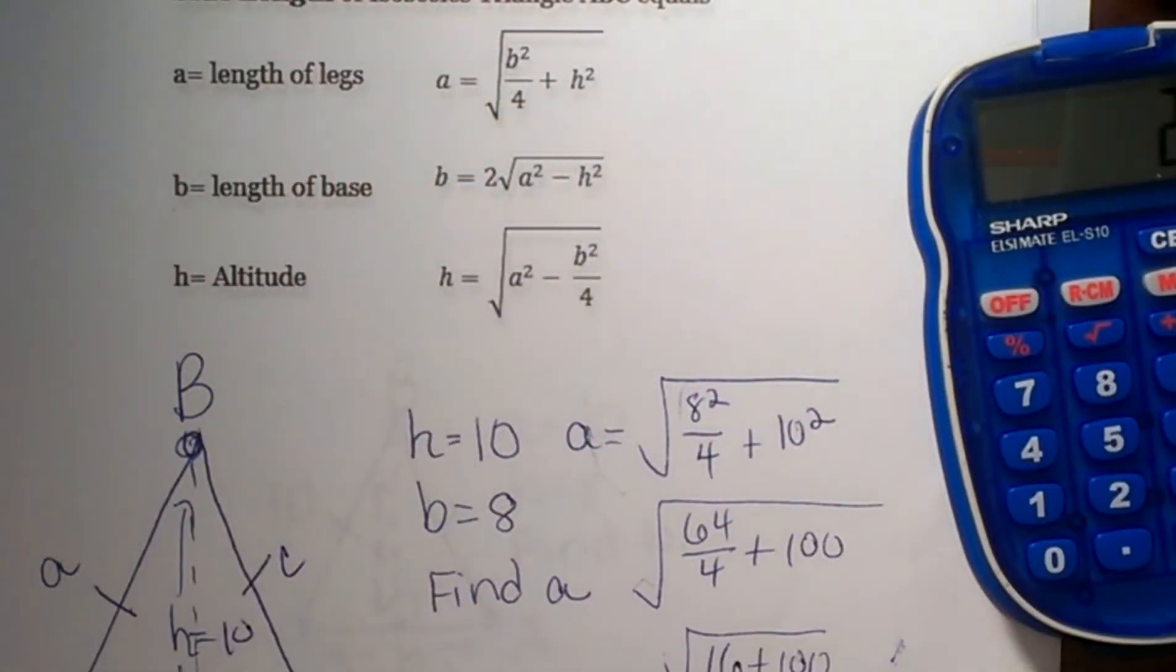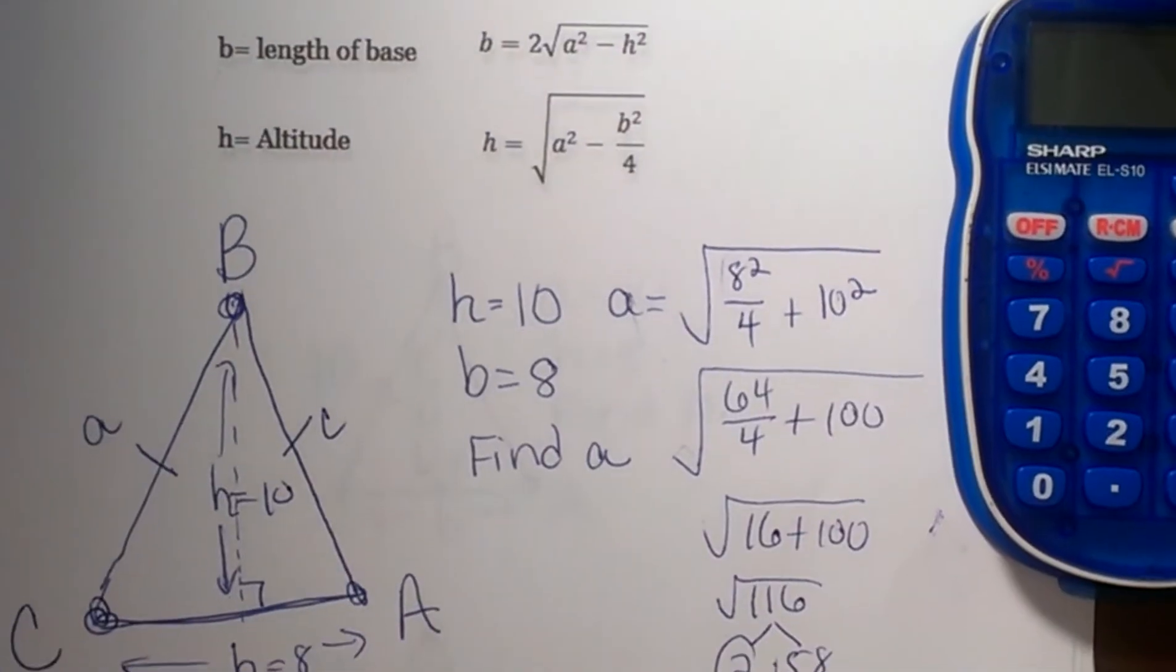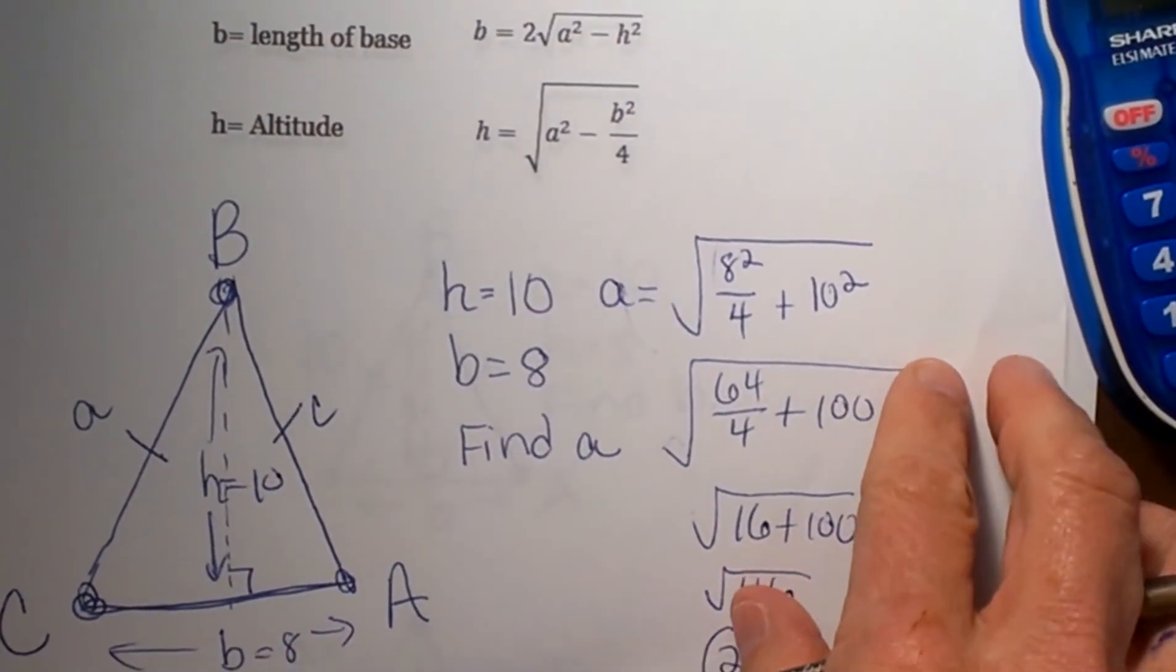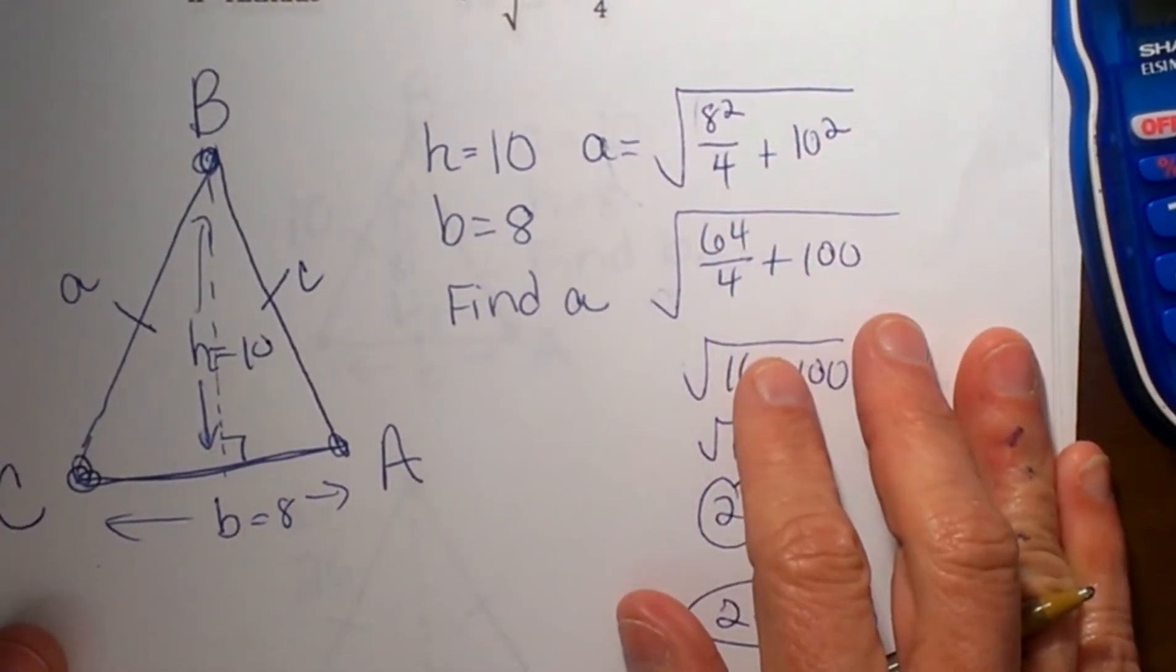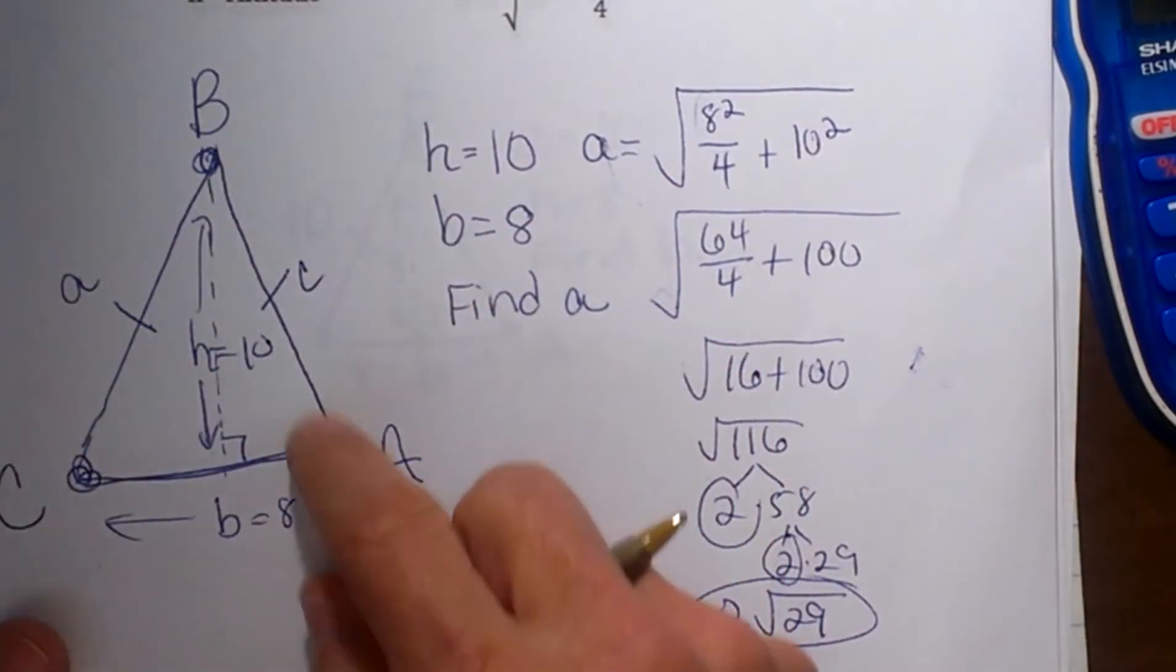Hopefully that was helpful. Another way to look at this is just to use the Pythagorean Theorem. If I split this isosceles triangle,